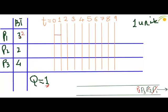Now it's P2's turn. P2 performs its operations and the remaining burst time of P2 will be 1. Since it is 1, it will join the queue again — it will be P2. Now it's P3's turn. P3 performs its operations for one unit of time and the remaining burst time of P3 becomes 3, and it will join the queue again.